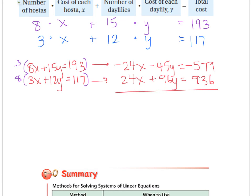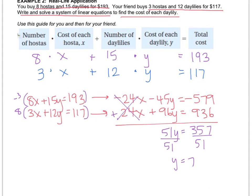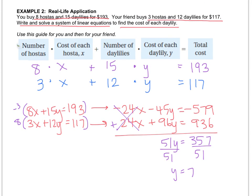Now when I go to add, these 24s will eliminate each other. So negative 45 plus 96 is 51, and then negative 579 plus 936 is 357. Divide by 51, and you get that y equals 7. So since this is a word problem, we need to put a label. What does y stand for? If you go back up to the story, y stood for the cost of each daylily. So it's $7 per daylily.